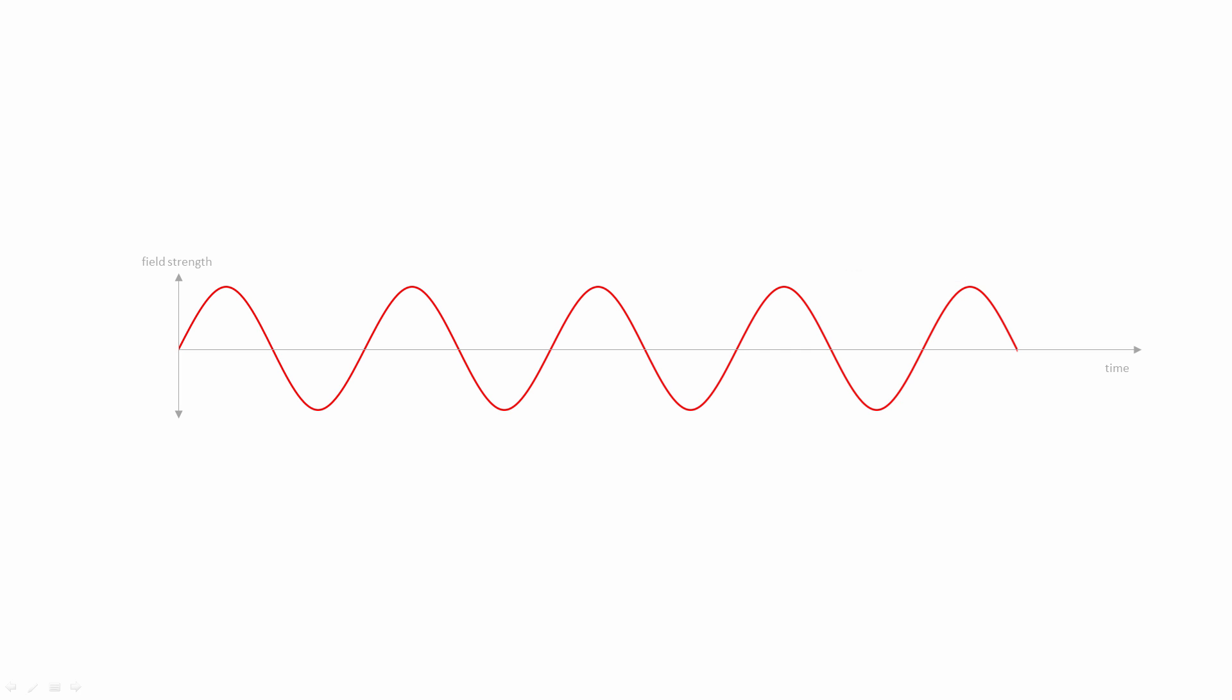Look at a sine wave and you can see that there's a repeating pattern, which represents one complete oscillation of the wave. It's known as a cycle.